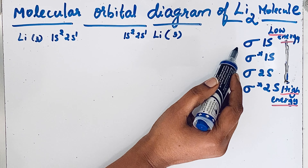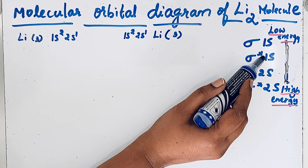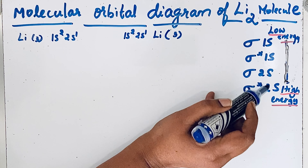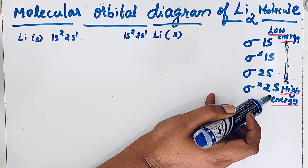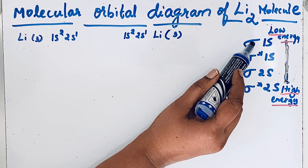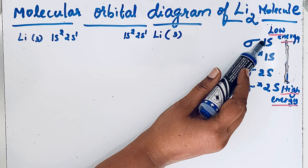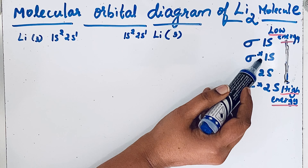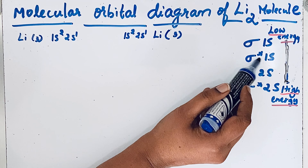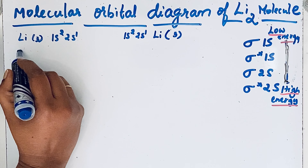These molecular orbitals are arranged on the basis of their energy. After filling the sigma 1s orbital, only then can electrons enter into the sigma* 1s orbital of the lithium molecule.